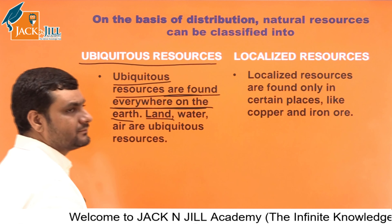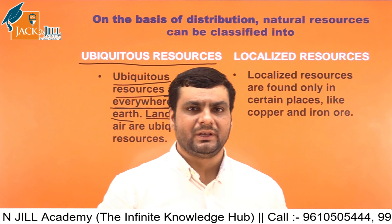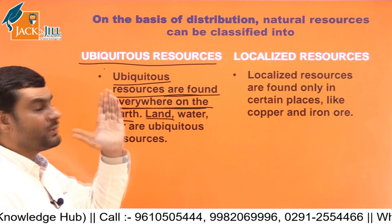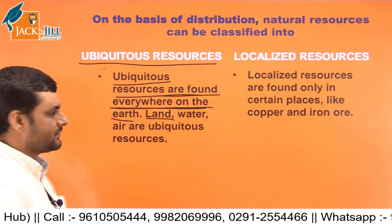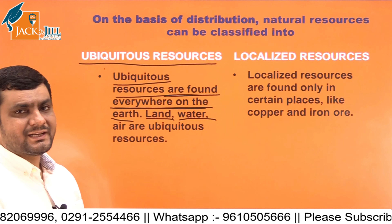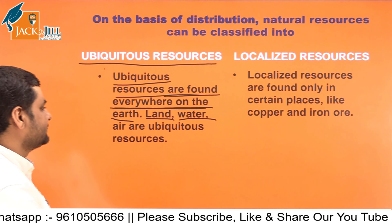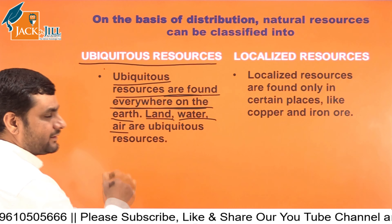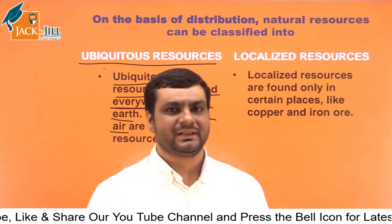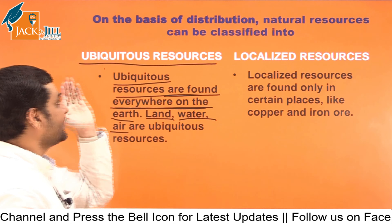For example, land — if you go to any part of the earth, you will find land. Water — even in the Sahara desert it may be difficult to find but you can find it. Air — it is everywhere. Go to any corner of the earth, you will find air. So these are ubiquitous resources.